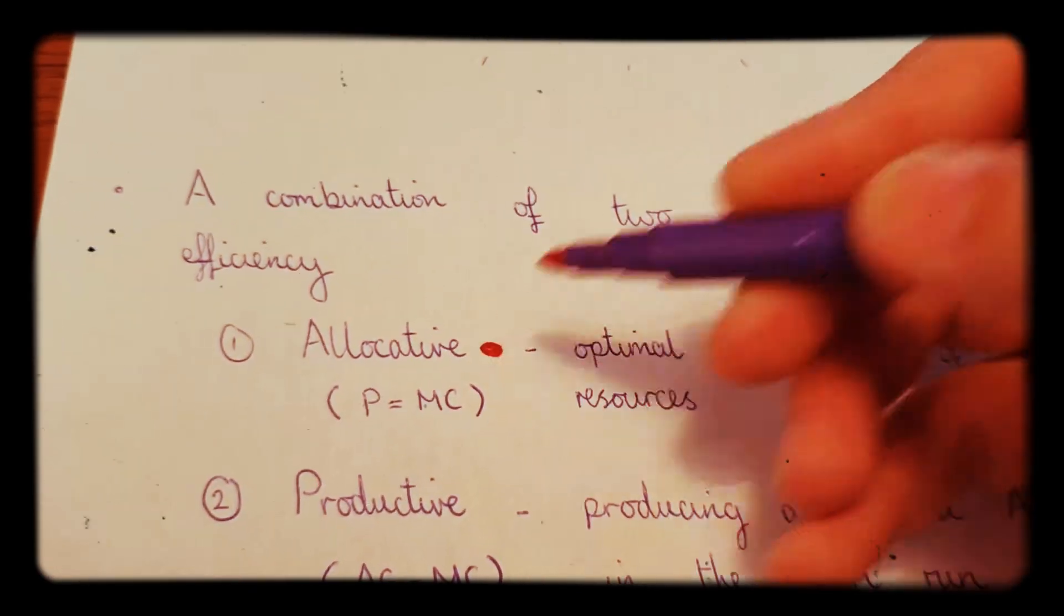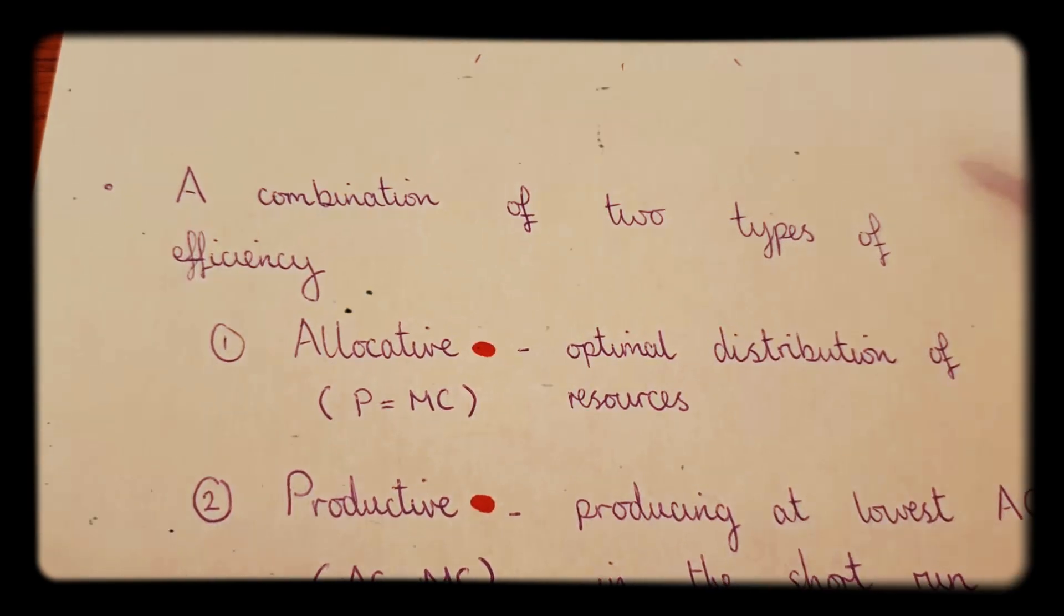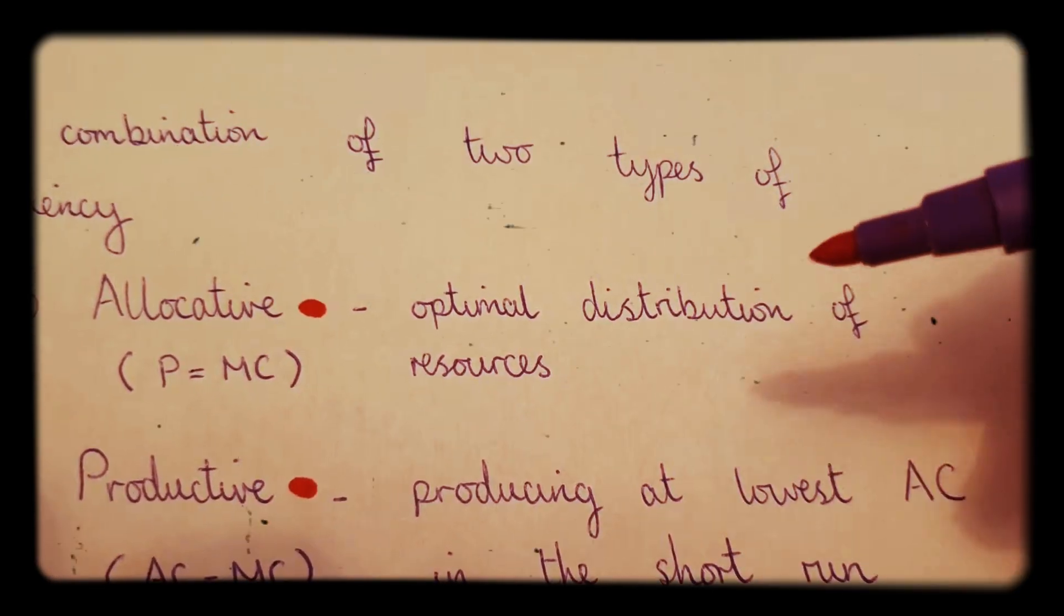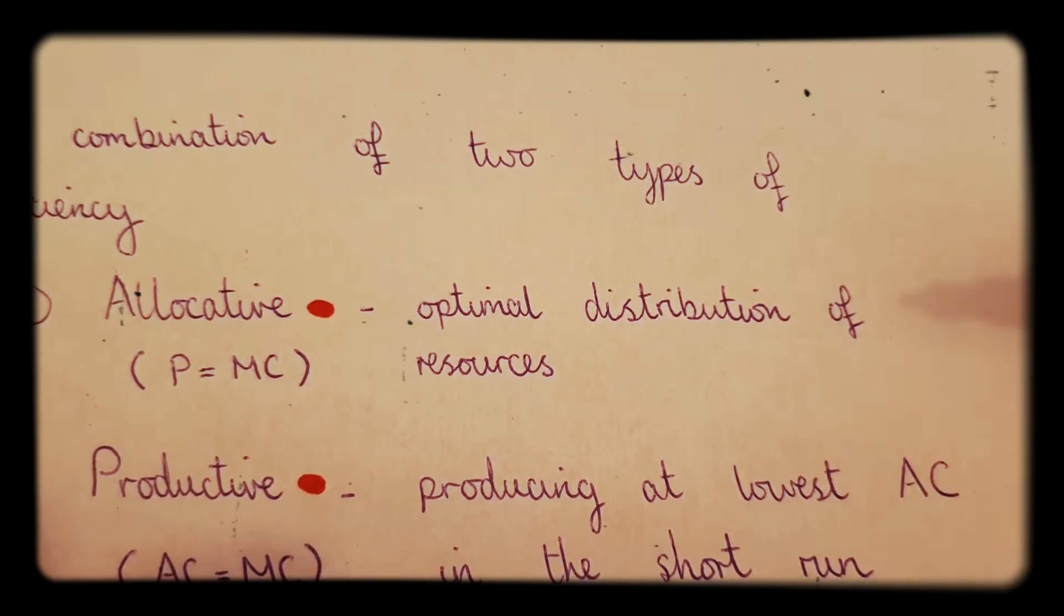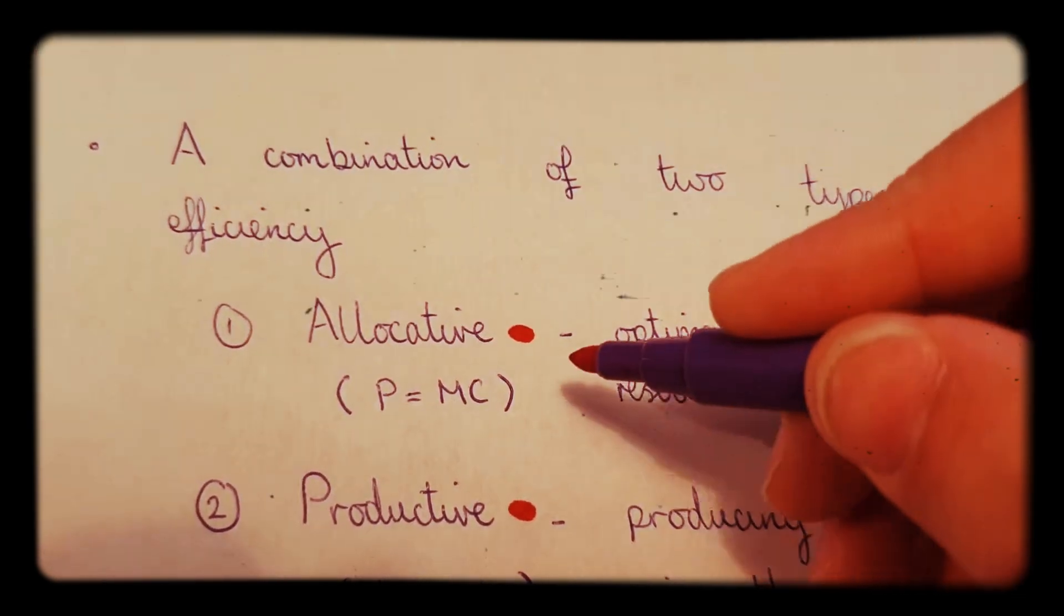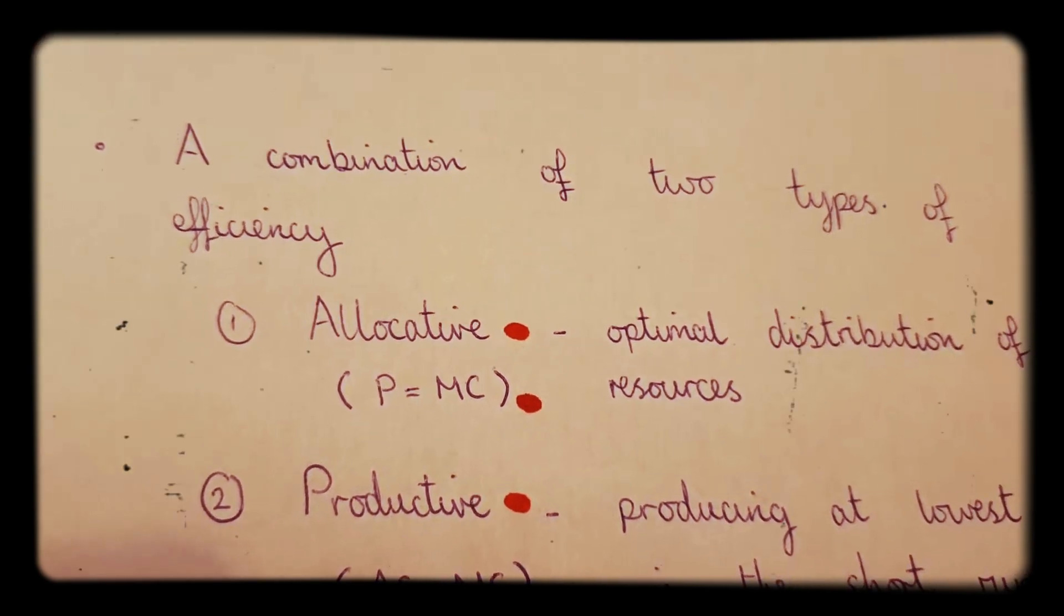Allocative efficiency and productive efficiency. Allocative efficiency just means that the resources are being optimally distributed, and the way to achieve that is by producing at the point where the price is equal to the marginal cost.